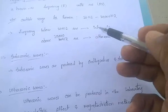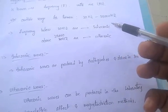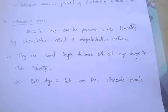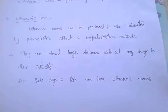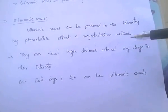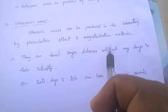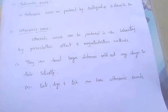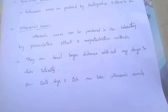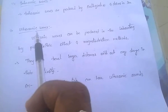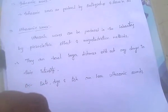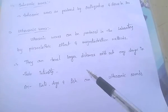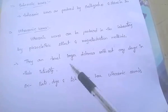Infrasonic waves are produced by earthquakes and storms in the sea. Ultrasonic waves can be produced in the laboratory by the piezoelectric effect and also by magnetostriction methods. These ultrasonic waves can travel longer distances without any change in their intensity.